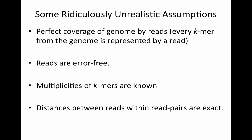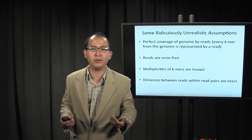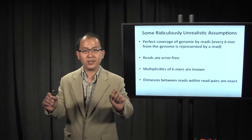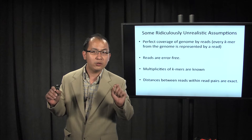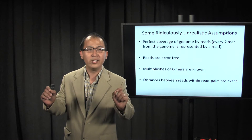We assumed that we have perfect coverage of the genome by reads — that means at each position on the genome, we have a read generated at that position. Secondly, we assumed that reads are error free. Thirdly, we assumed that multiplicity of k-mers are known. And also, we assumed the distance between reads within read pairs were known exactly.